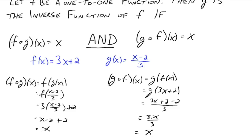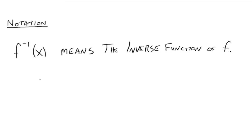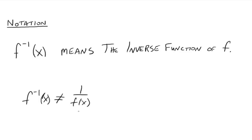So now let's go on to our notation. Here's the notation: f with a little negative 1 up here, of x — you read that as f inverse of x. That's what it means: f inverse of x, or the inverse function of f. It is not an exponent, negative 1. This does not mean 1 over f of x. That's the most common mistake — putting 1 over f of x — because this negative 1 does not represent an exponent. This is all function notation.